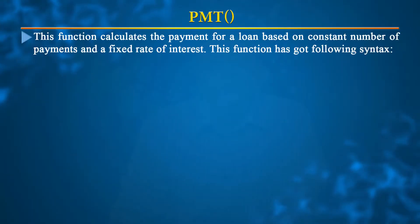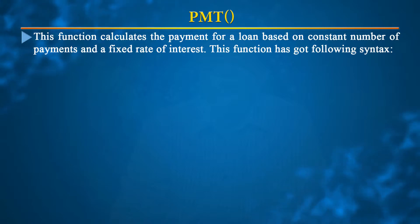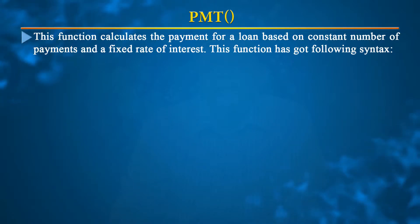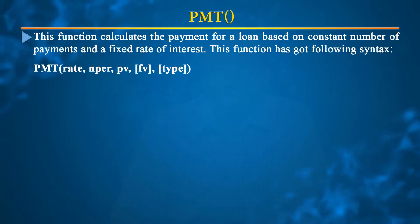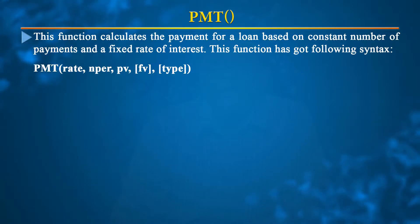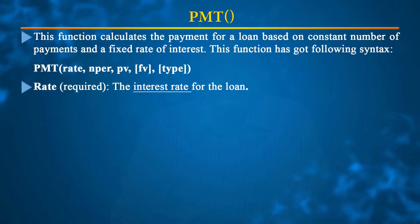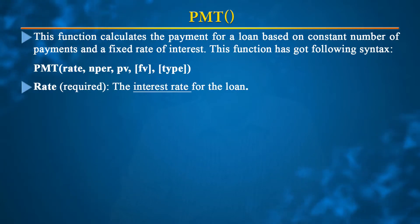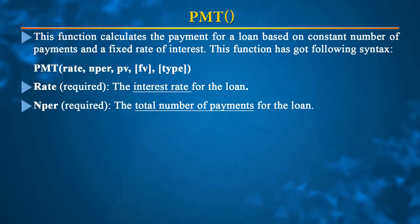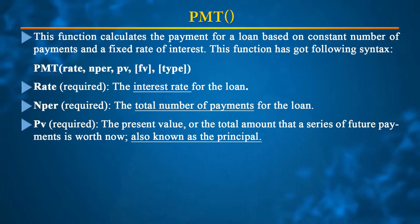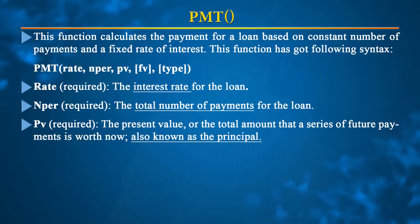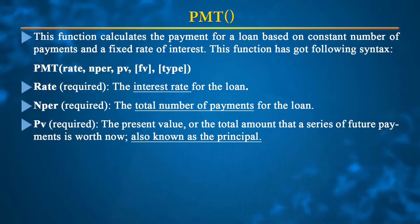Let's start with the PMT function. PMT calculates a payment for a loan based on a constant number of payments and a fixed rate of interest. The syntax takes care of the following arguments: the first argument is the rate, which is the interest rate for the loan; the second argument is NPER, which is the total number of payments for the loan; and PV is the principal value — the amount of loan taken. There are also two optional arguments.